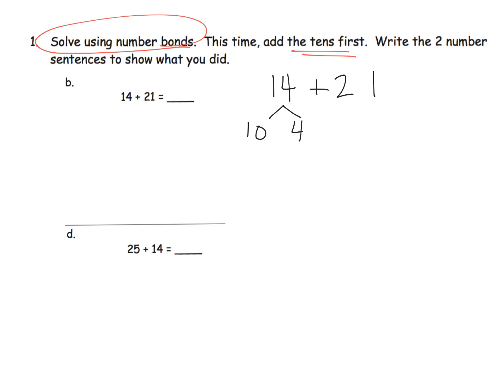And because they want us to add the tens first, we're going to do 10 plus 21. And so we're going to write down 10 plus 21, and that gives us 31. And now we're going to take that 31 and add in the 4 that's still left over there. So 31 plus 4 gives us 35, and that's the answer.